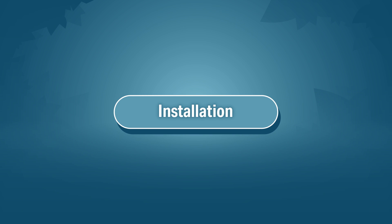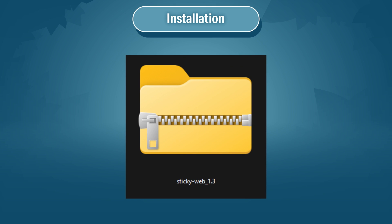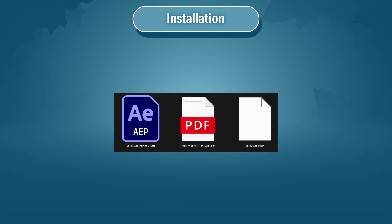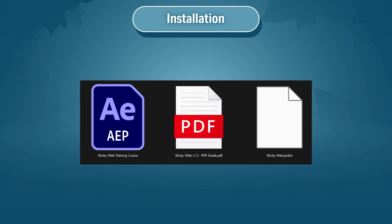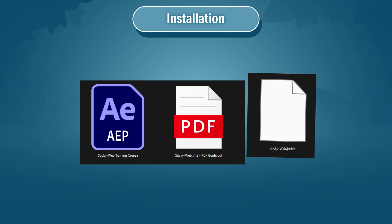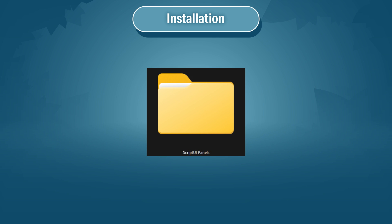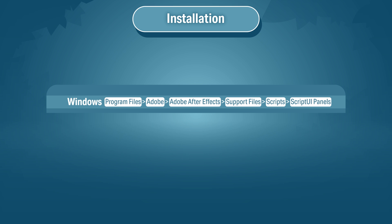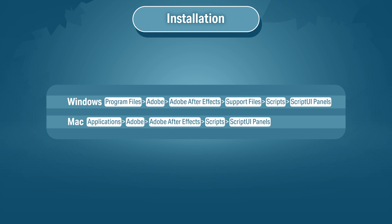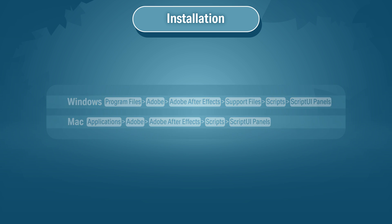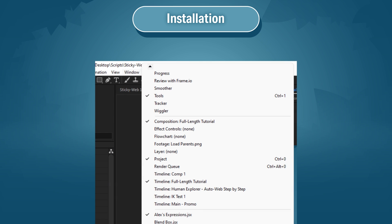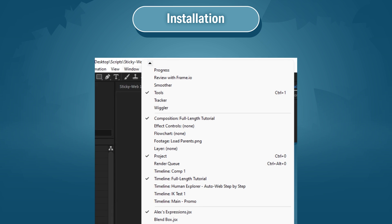Alright, let's get started. Once you download StickyWeb, open up the zip file. Inside you get the script itself, a PDF guide, and a training course project to practice on. To install the script, just drag the script file into your Script UI Panels folder. On Windows you'll find the folder here, and on Mac you'll find the folder here. Once you move the file, just restart After Effects, and under the Window drop-down you'll find StickyWeb.